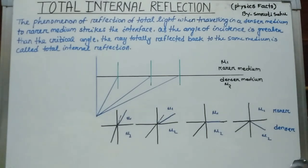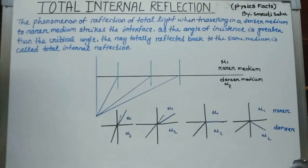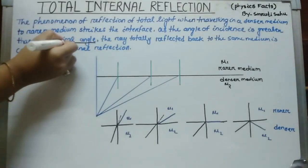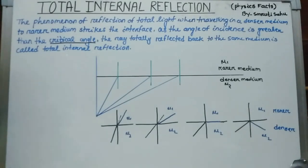This phenomenon states that when light traveling in a denser medium to a rarer medium strikes the interface, and the angle of incidence is greater than the critical angle, then the ray is totally reflected back to the same medium — this is called total internal reflection.